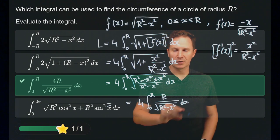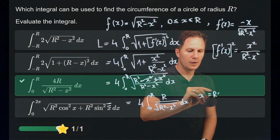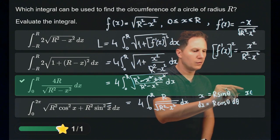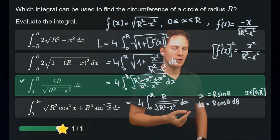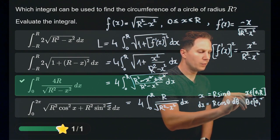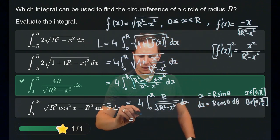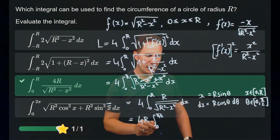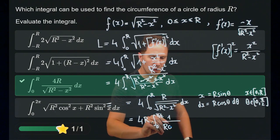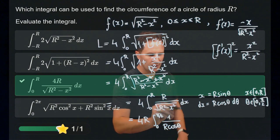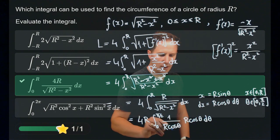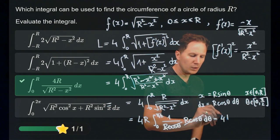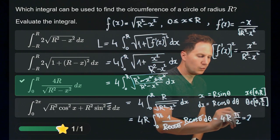We use the trigonometric substitution x = r sin θ, so dx = r cos θ dθ. As x goes from 0 to r, sin θ goes from 0 to 1, so θ varies from 0 to π/2. Pulling out the factor r, the integral from 0 to π/2 of 1 over r cos θ times r cos θ dθ simplifies beautifully — r cos θ cancels, leaving the integral of 1 from 0 to π/2, which is π/2. Multiplied by 4r, we get 2πr, as expected.